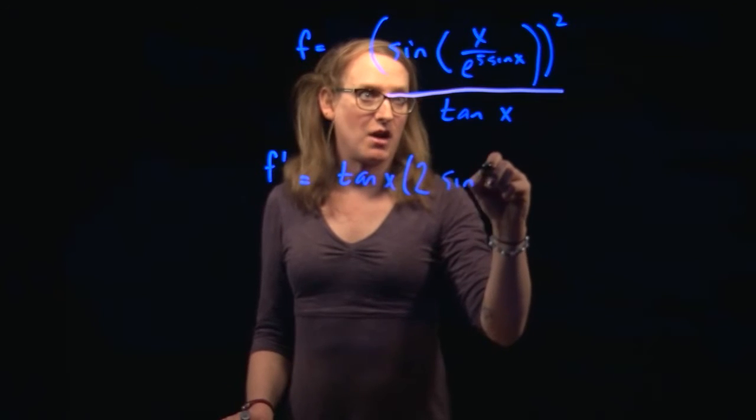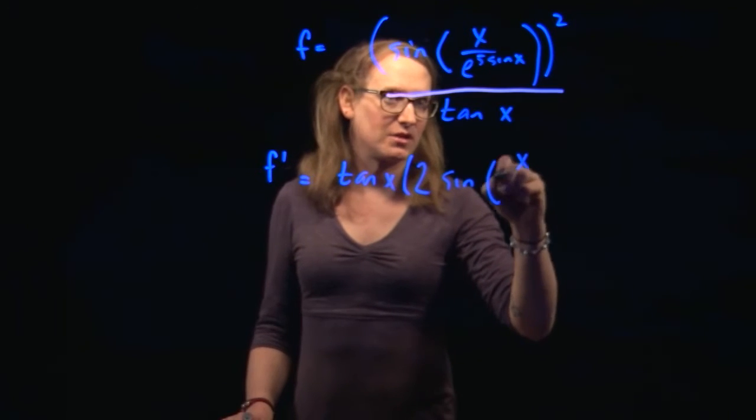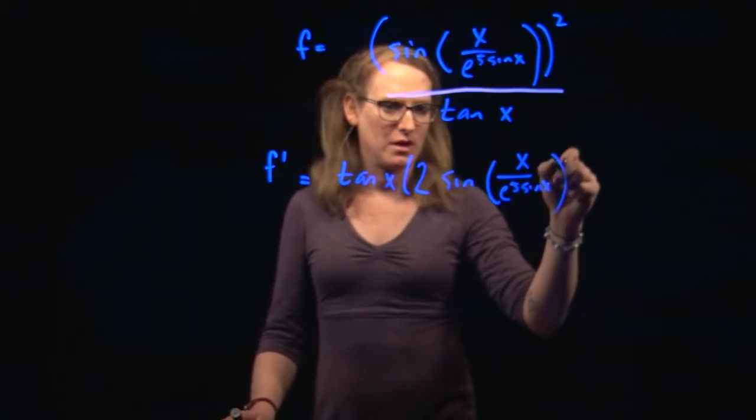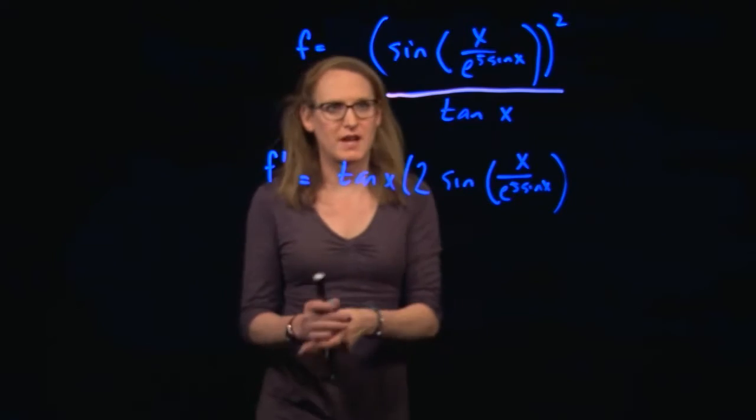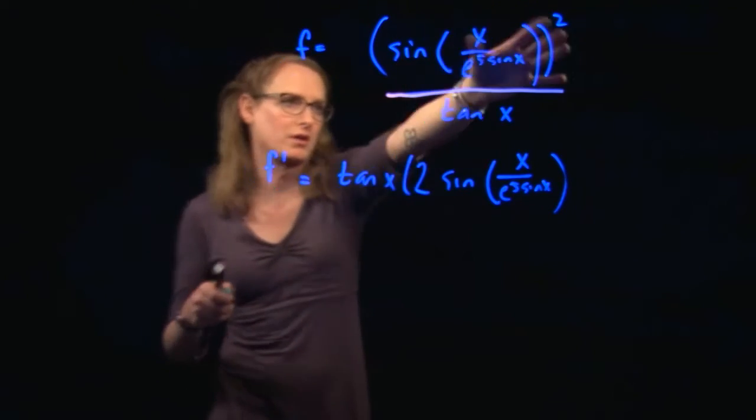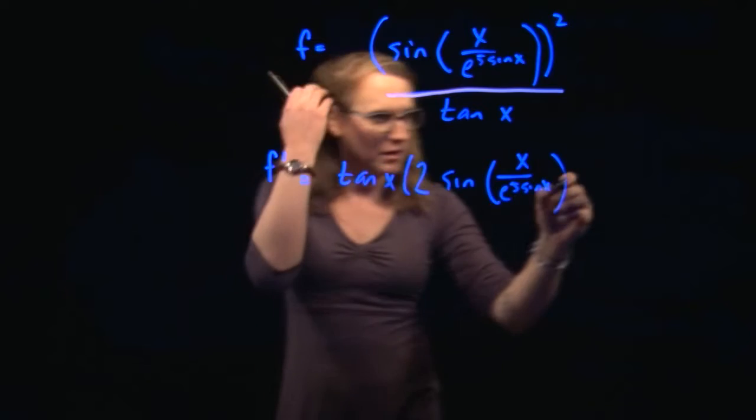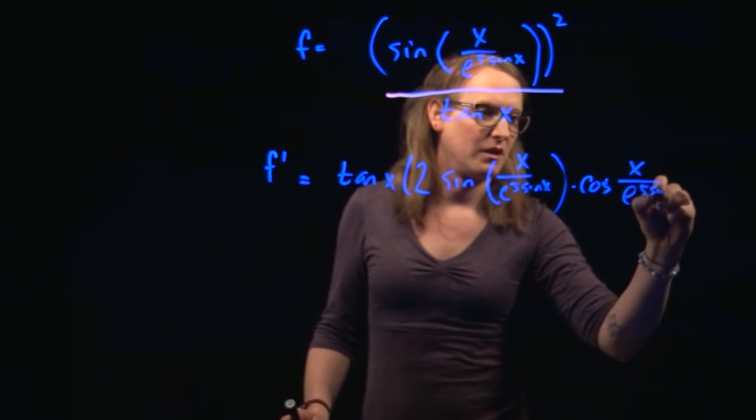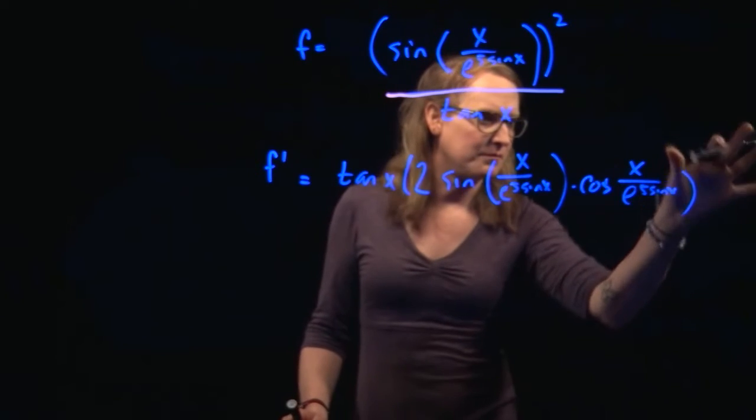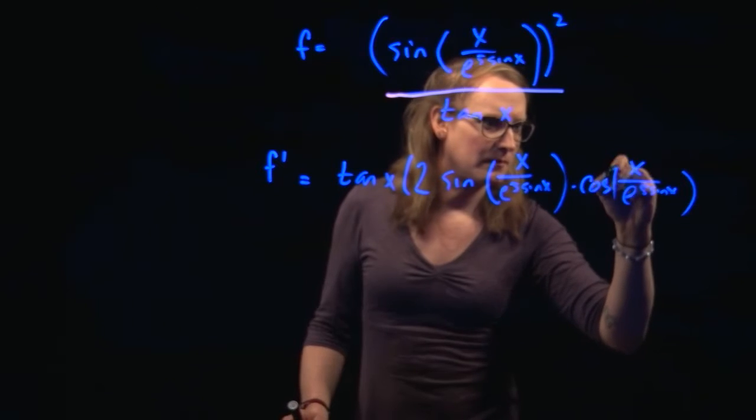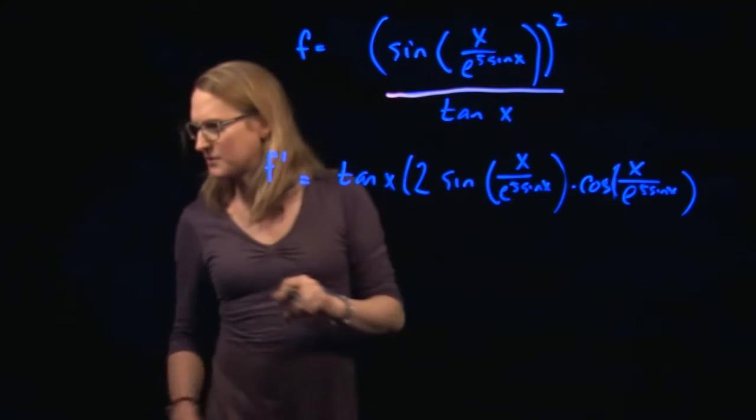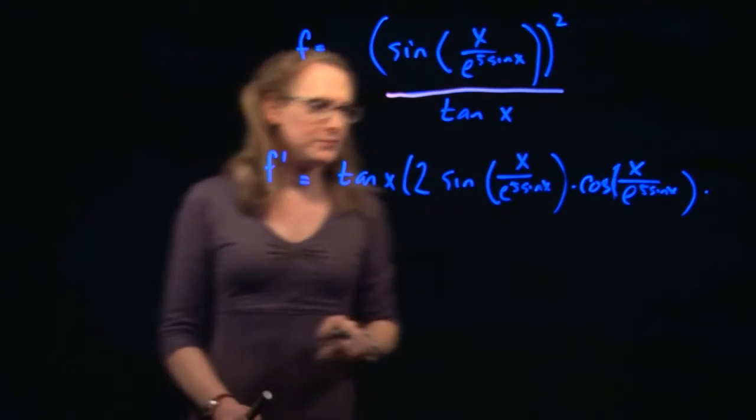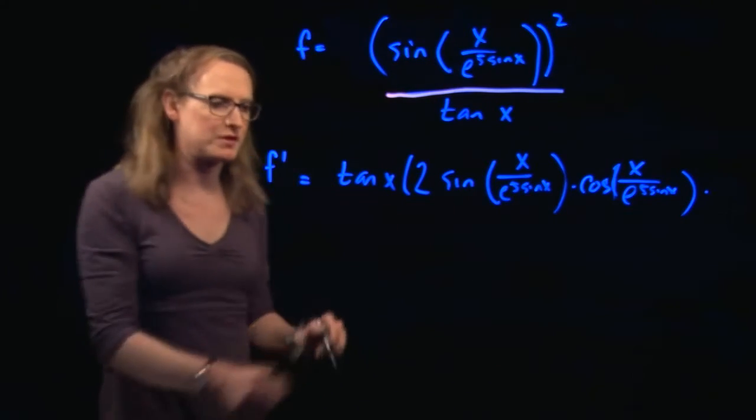So two times sine of x over e to the five sine x to the one power. And now I have to chain out the next level. So now I'm going to take the derivative of the sine part, because it's squared, times cosine of x over e to the five sine x. I am so gonna roll off screen on that. That's absolutely fine. This line continues to the next line right here. Times, all right, so it's spilling over to the next line right here. So times.